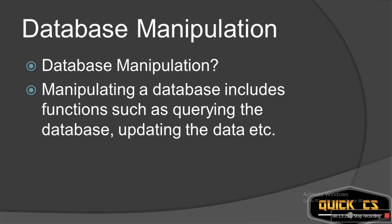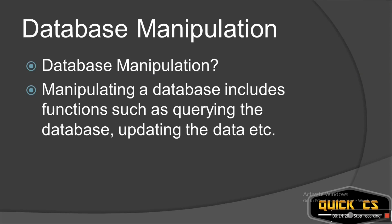Data manipulation includes functions such as querying and updating the database. Querying means sending a query to retrieve specific information — for example, getting a list of students whose attendance is less than 75%. Updating means modifying the data: if a student is absent, the teacher goes to the system at the end of the day and updates who was present and absent, and the student's attendance gets updated. These are the manipulation functions of a DBMS.